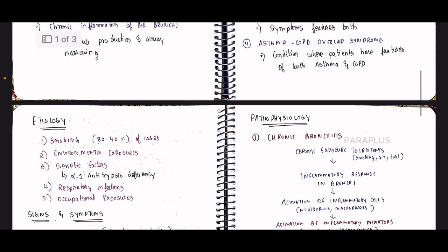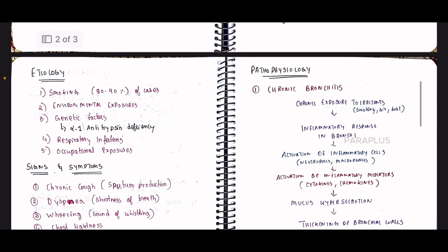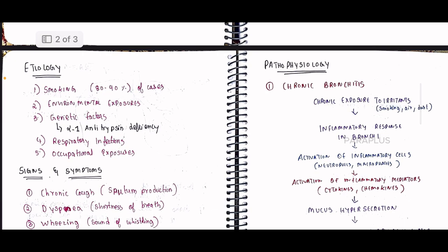Regarding etiology, smoking accounts for 80 to 90% of COPD cases. Other causes include environmental exposure to harmful gases or chemicals in industries.